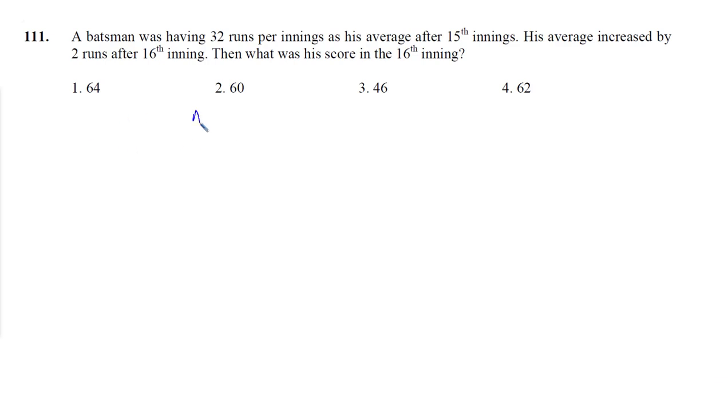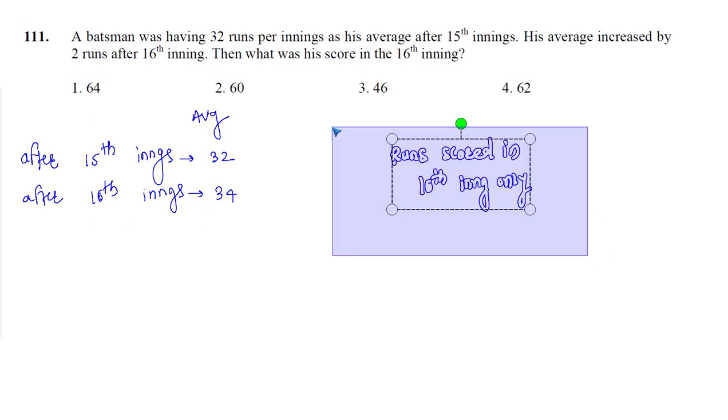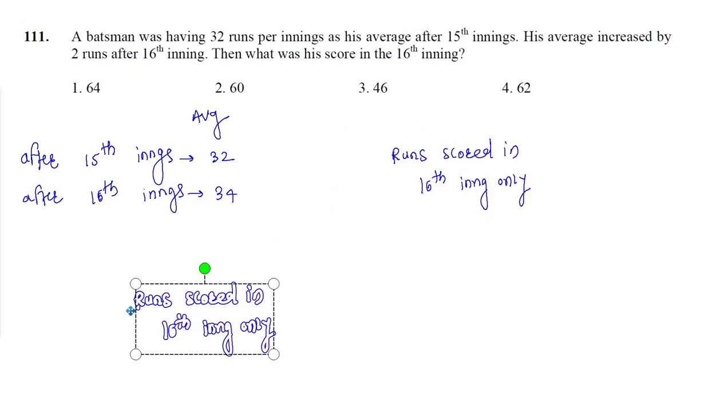So the question says that average after 15th innings is 32 and the average after 16th innings is two more, that is 32 plus 2 is 34. So we need to find runs scored in 16th inning only. There are two methods to solve this. First is you can directly multiply and then subtract.